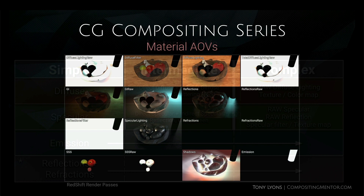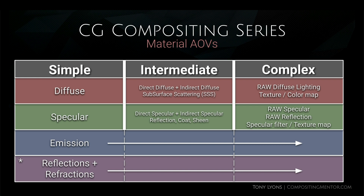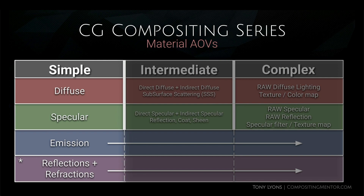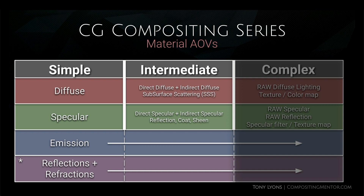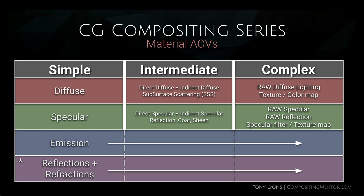Each column — simple, intermediate, and complex — represents rebuild options. I think it's best to start with the simplest subdivision: diffuse, specular, and emission, getting a full understanding of what those passes are accomplishing. Then we can move on to intermediate passes and finally the more complex, smallest parts. If you can accomplish what you need in the simple category, your comp will be lighter and more efficient. But if you want control of every single piece of your render down to the smallest component, you can set up a larger, more complex node tree.